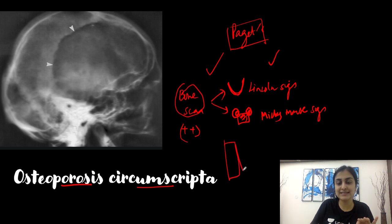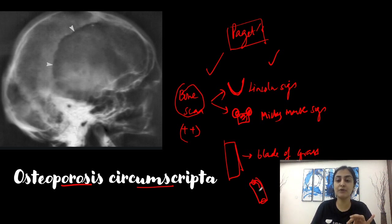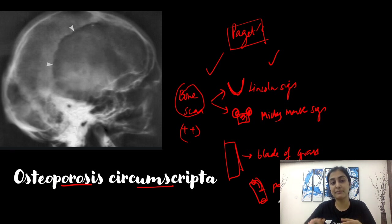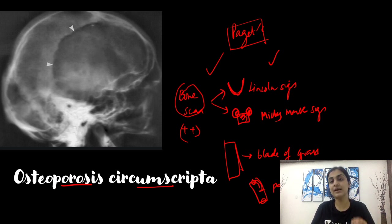In long bones, when lysis is happening, we call it the blade of grass appearance. In the sclerotic or burnt-out phase, the bones become deformed and prone to pathological fractures. Once a fracture happens the bone appears bent like a banana — referred to as the banana sign. Note: the banana sign is also seen in Chiari 2, alongside the lemon sign.